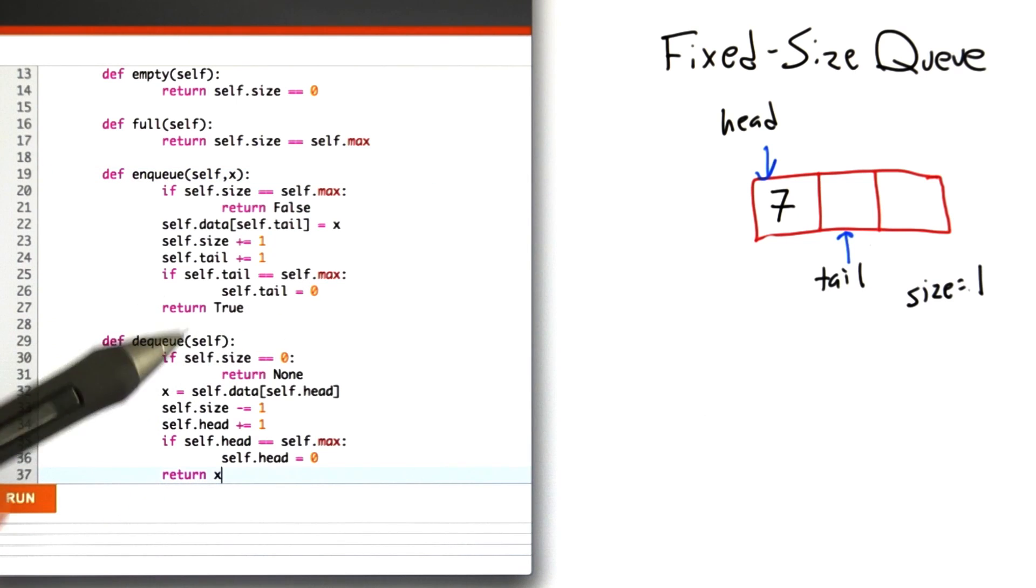The dequeue operation is very similar. First, if the size of the queue is 0, then the queue is empty and we're not going to be able to dequeue an item. What we do in this case is return Python's None type, a special data type that indicates we don't have any actual value.